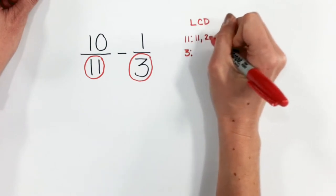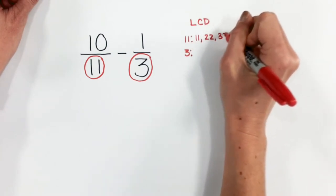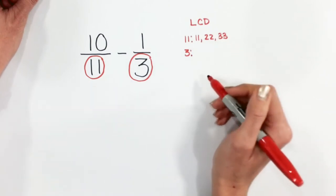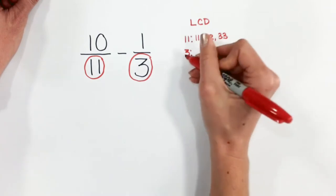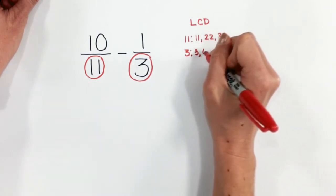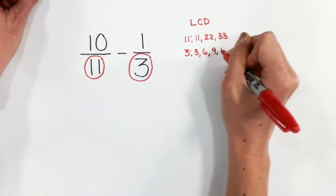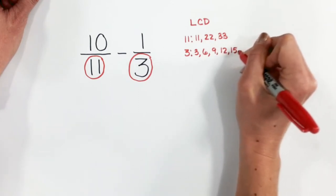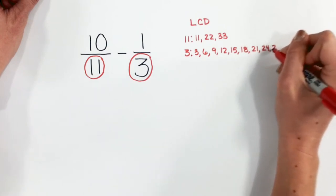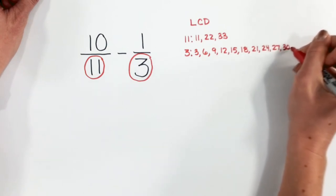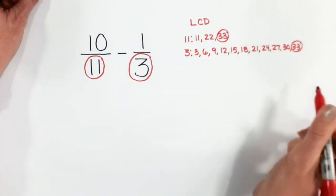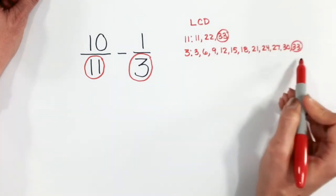I know eleven, twenty-two, thirty-three, and I can stop right here because I know that three times eleven will get me to thirty-three. But let's go ahead and list out our multiples so we can see that: three, six, nine, twelve, fifteen, eighteen, twenty-one, twenty-four, twenty-seven, thirty, thirty-three. So thirty-three is the smallest number that they both have in common.